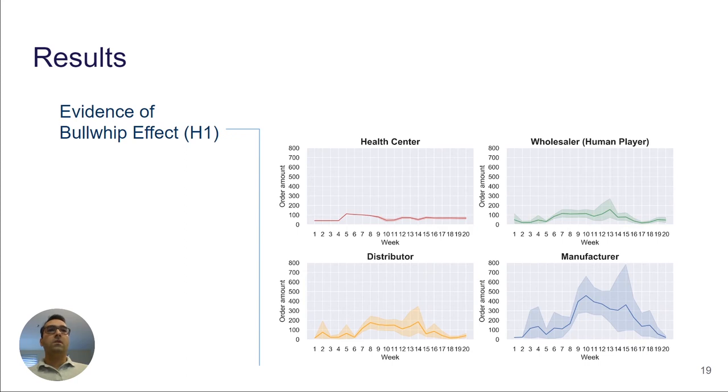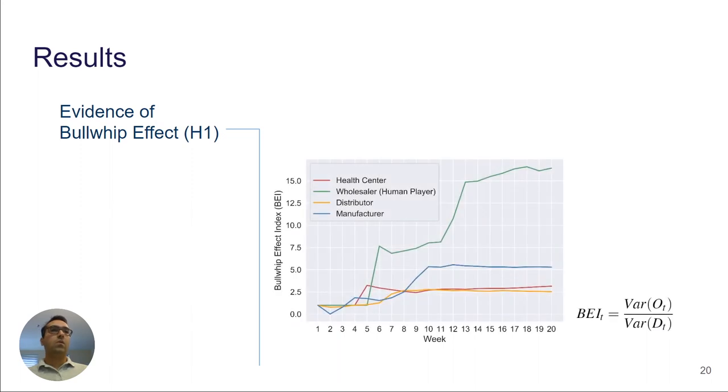We first look at the evidence of the bullwhip effect in condition 1. And as you can see, the bullwhip effect is visible with an increase in order quantities moving up in the supply chain, from the health center to the manufacturer. But since the players only played the wholesaler and the rest of the agents were computer agents, we also calculated the bullwhip effect index, which is the ratio of order fluctuations over demand fluctuations at each node or for each agent, basically. We can observe that human-like agents contributed to the bullwhip effect by showing fluctuations. Human players, however, show even more fluctuations and contributed to the bullwhip effect more than human-like agents.